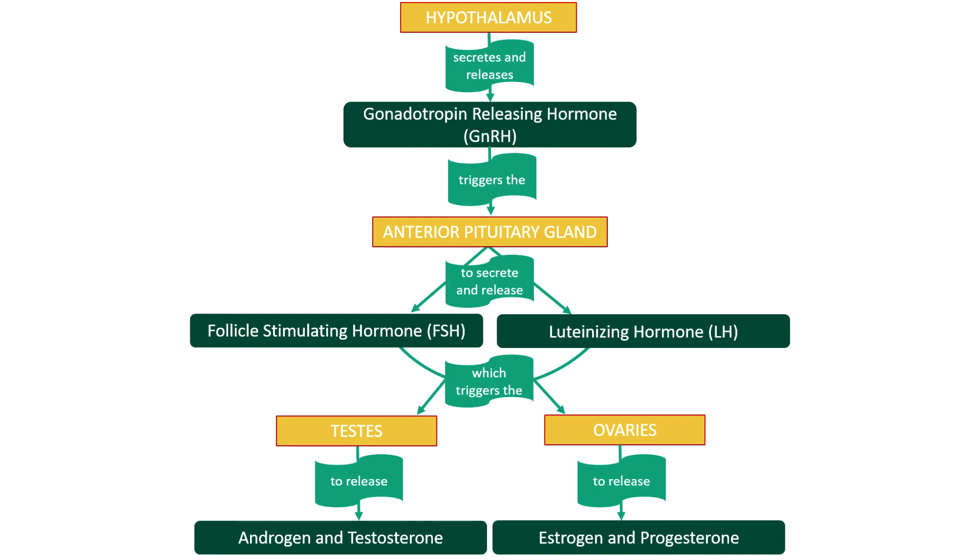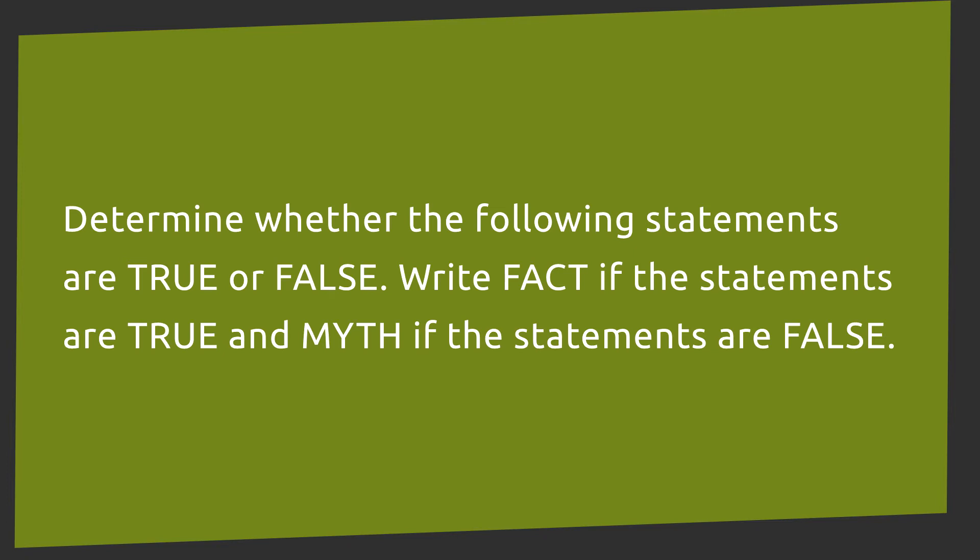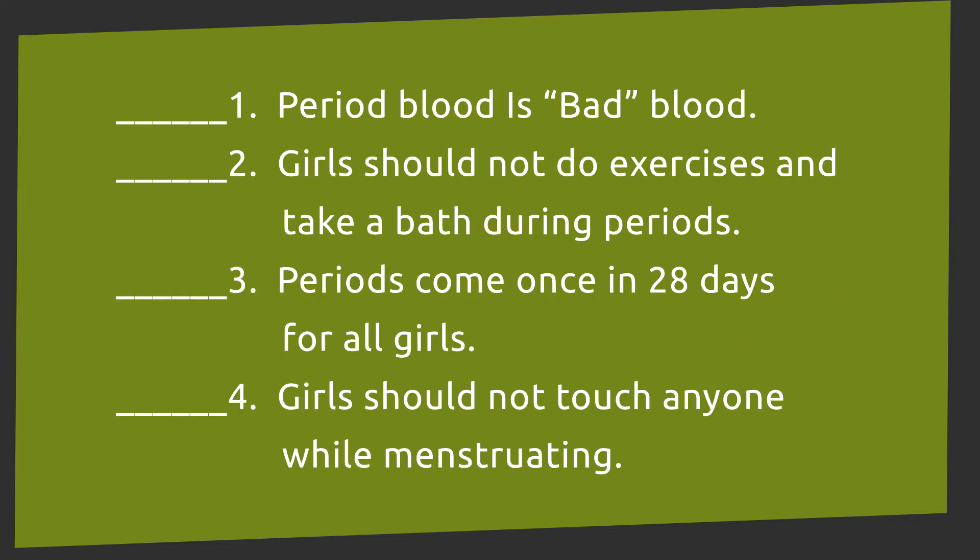Let's start the lesson by answering the first activity. You will determine whether the following statements are true or false by writing 'fact' for true statements and 'myth' for false statements. Number one: period blood is bad blood. Number two: girls should not do exercises and take a bath during menstrual period. Number three: periods come once every 28 days for all girls. Number four: girls should not touch anyone while menstruating. I'll give you five minutes to answer.